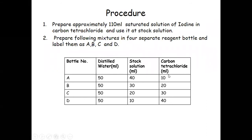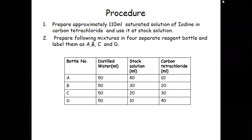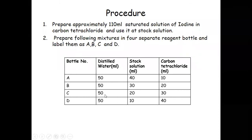In bottle A, take 50 ml distilled water, 40 ml stock solution, and 10 ml carbon tetrachloride. In bottle B, take 50 ml distilled water, 30 ml stock solution, and 20 ml carbon tetrachloride. In bottle C, take 50 ml distilled water, 20 ml stock solution, and 30 ml carbon tetrachloride. In bottle D, take 50 ml distilled water, 10 ml stock solution, and 40 ml carbon tetrachloride.